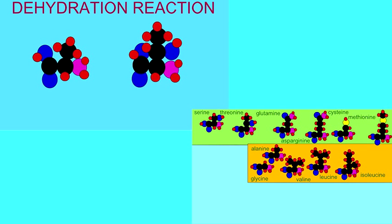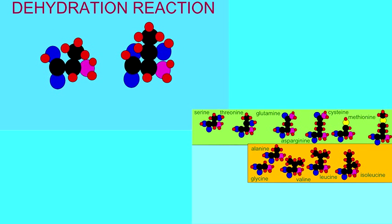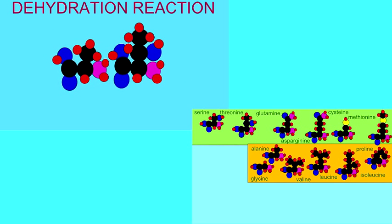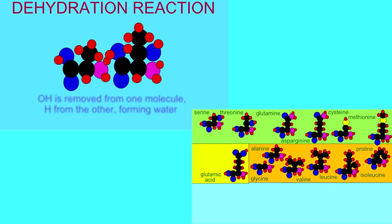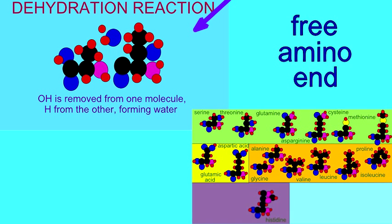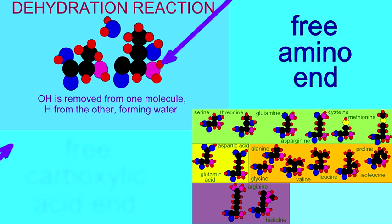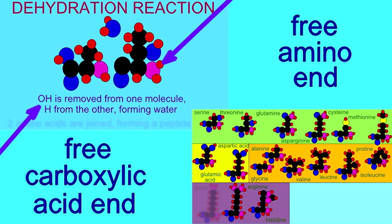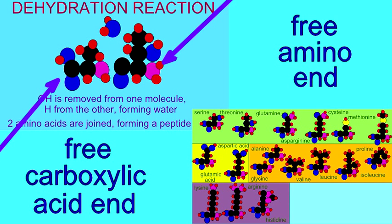When amino acids react, forming peptide bonds, this leaves one side of the peptide with a free amino group and the other side with a free acid group, and this trend continues if more and more amino acids are added to the chain.